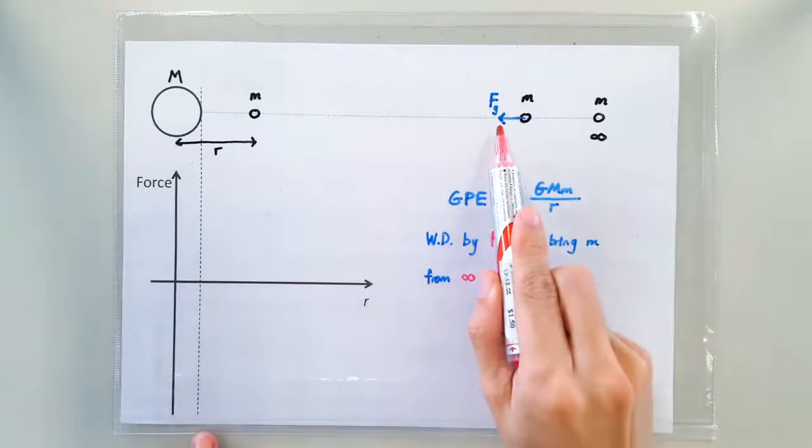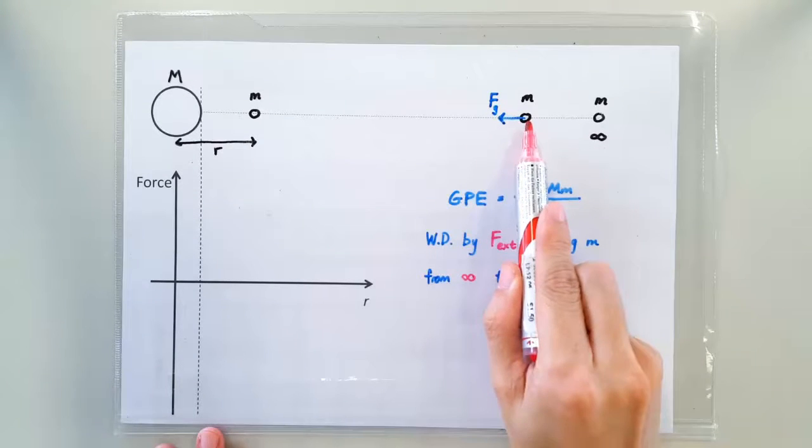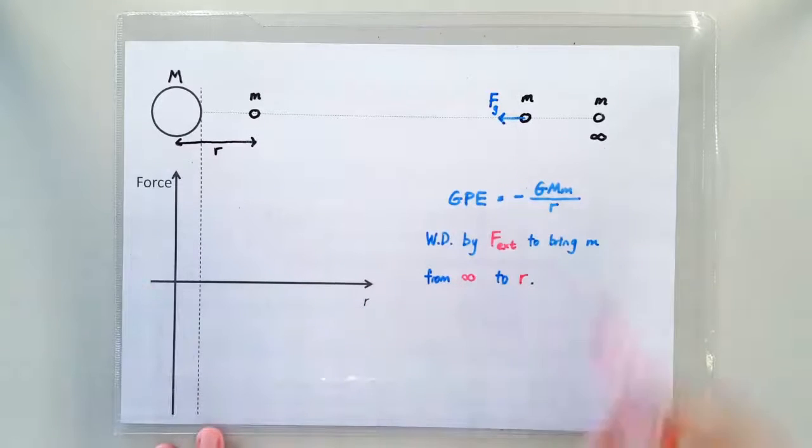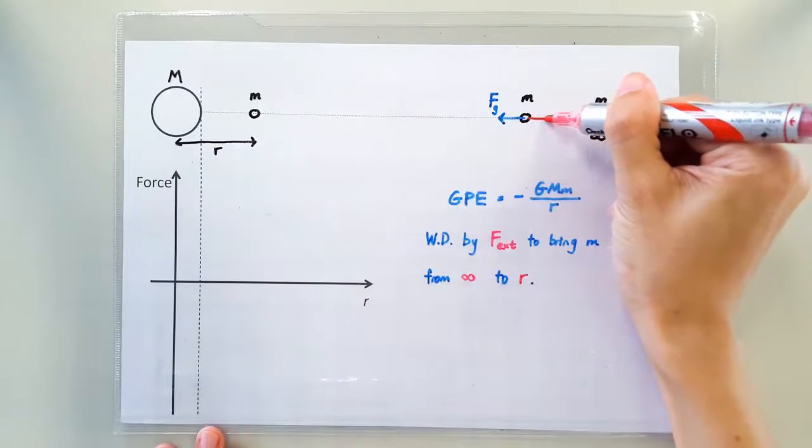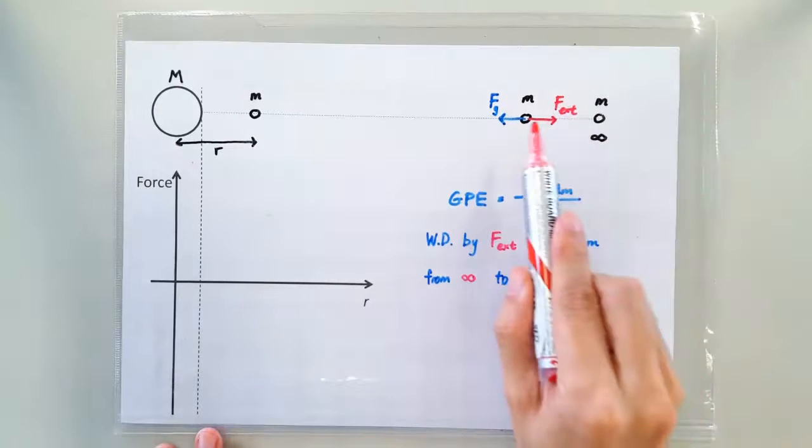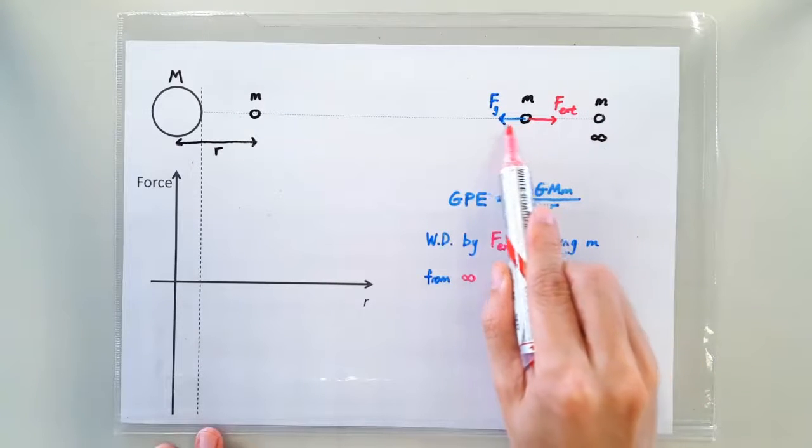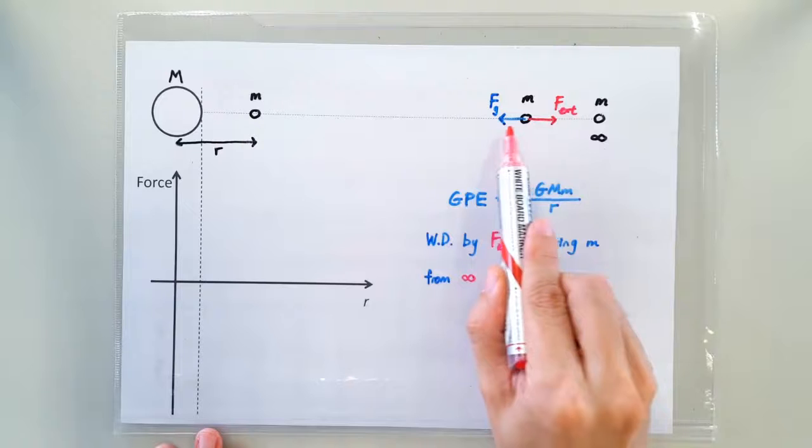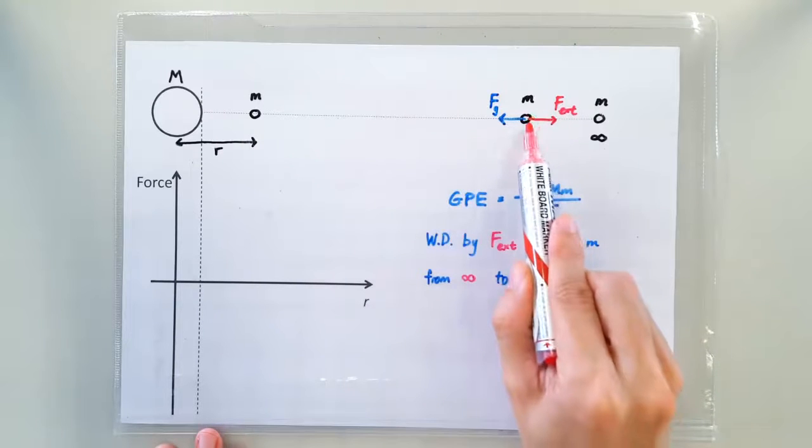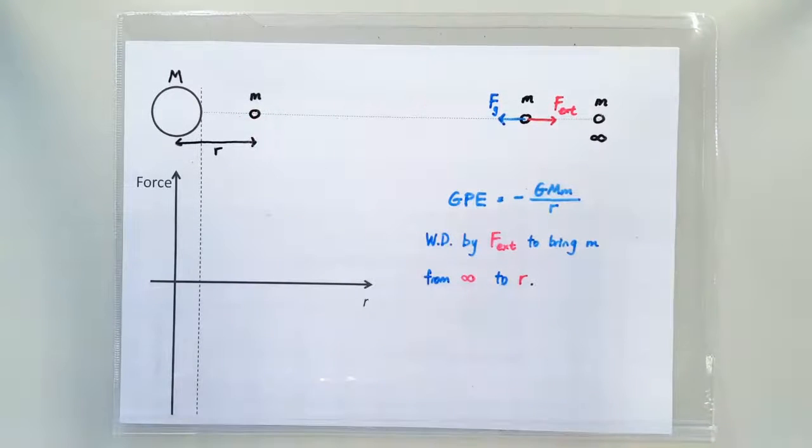Exactly because the gravitational force would accelerate small m towards big M, we need the external force to act as a braking force so that the small mass m does not accelerate, so that it does not pick up any kinetic energy as we move it from here to here.